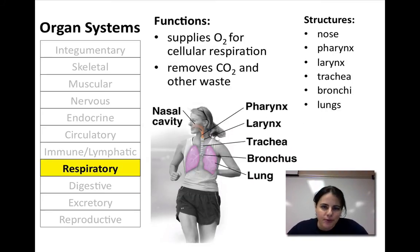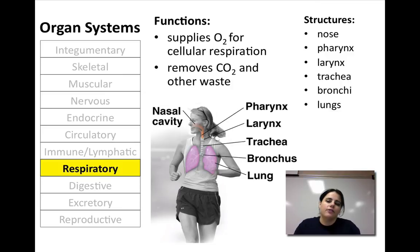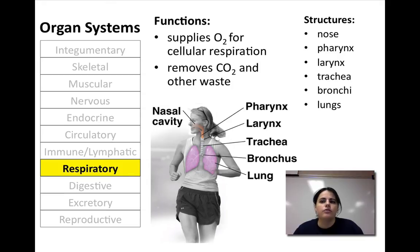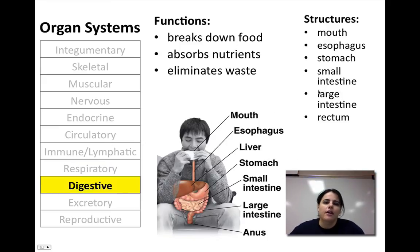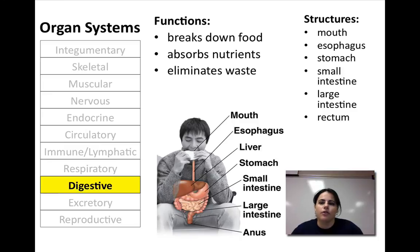The respiratory system functions to supply oxygen and rid carbon dioxide needed for cellular respiration to make ATP. The respiratory and circulatory systems work together closely to deliver CO2 and oxygen to and from your body. Your nose, pharynx, larynx, trachea, bronchi, and lungs are all different parts of the respiratory system. The digestive system breaks down food and absorbs nutrients, and anything it doesn't use gets rid of as a waste product. Your mouth, esophagus, stomach, small intestine, large intestine, and rectum are the major players in your digestive system.